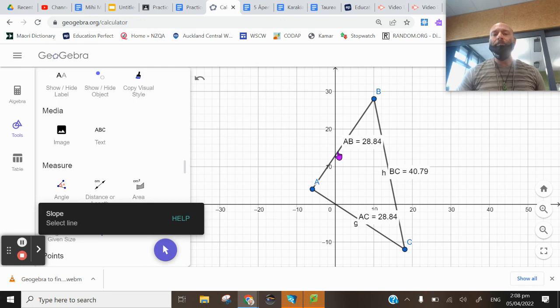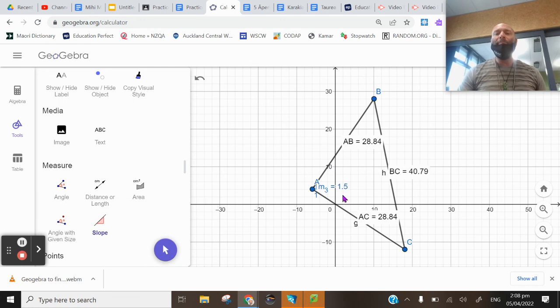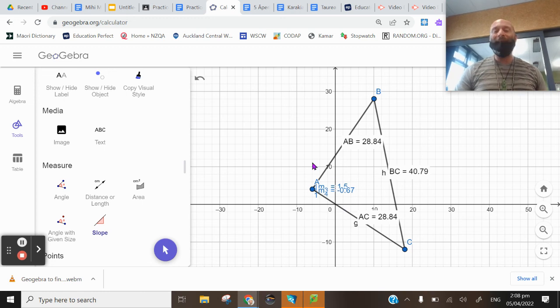That's a gradient of 1.5. That one has a gradient of negative 0.67. Time those together. You do get negative one. Proving we've got an isosceles right angle triangle.